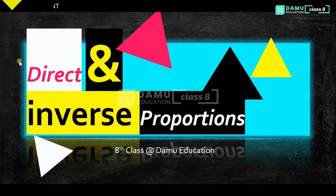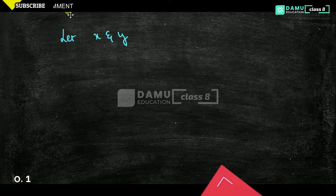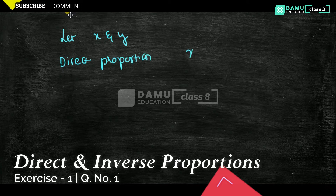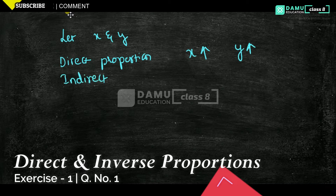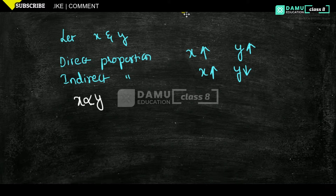Let's take two quantities X and Y. Direct proportion means if X increases, Y will also increase. Indirect (inverse) proportion means if X is increasing, Y will decrease. In math terms, X is directly proportional to Y — we symbolize this with the alpha (∝) symbol.